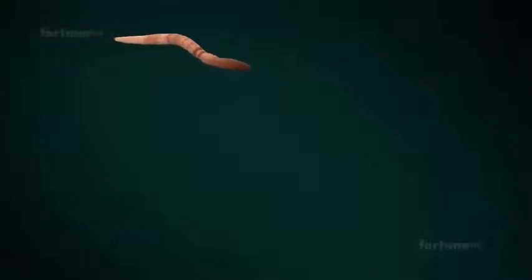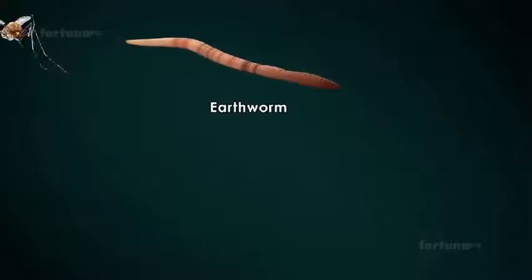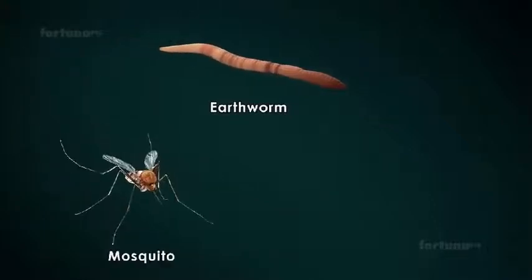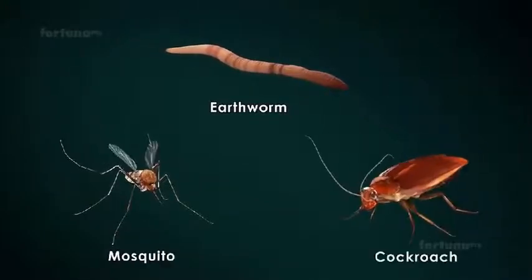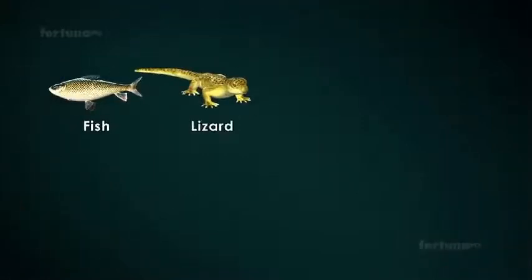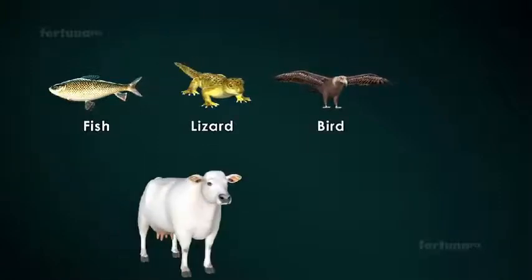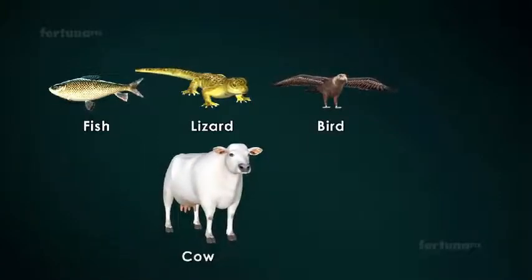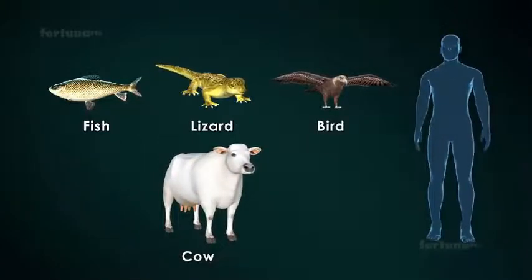Kingdom Animalia includes animals without bones such as the earthworm, insects such as the mosquito and cockroach, and animals with bones such as fish, lizards, birds, cows, and humans.